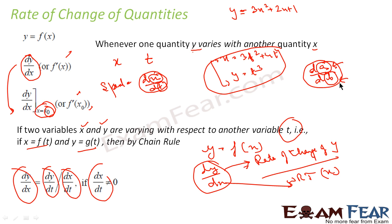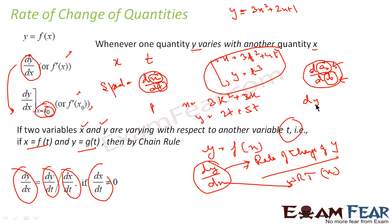So da/db is the rate of change of a with respect to b, and this can be used for any variables a and b where a and b are linked. If a and b are not linked, this is 0. For example, if x = 3k² + 2k and y = 2t + 5t where k and t are independent, then x and y are also independent, and dy/dx will be 0. These quantities have a value only if both are related.